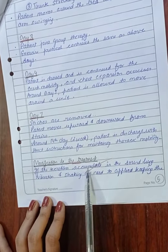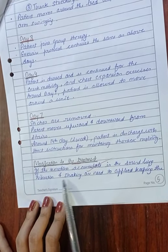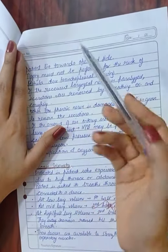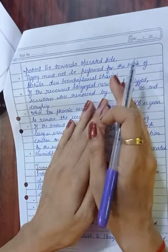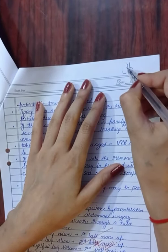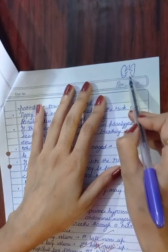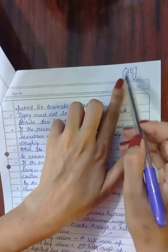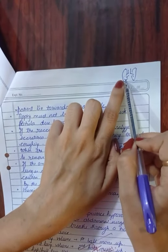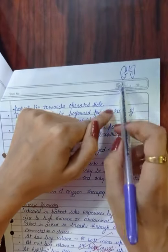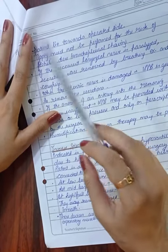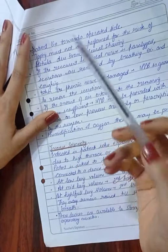Modifications to treatment: if secretions accumulate in the sound lung, vibrations and shaking are applied while keeping the patient lying towards the operated side, so that techniques can be applied to the intact lung to remove secretions. Tipping must not be performed due to the risk of fistula formation, which is another complication.